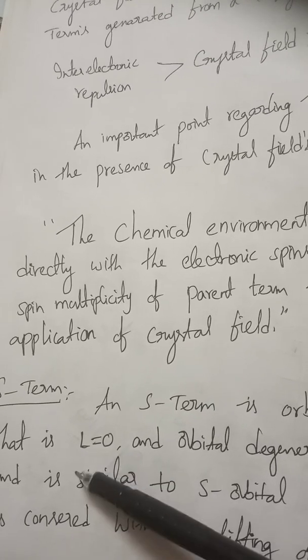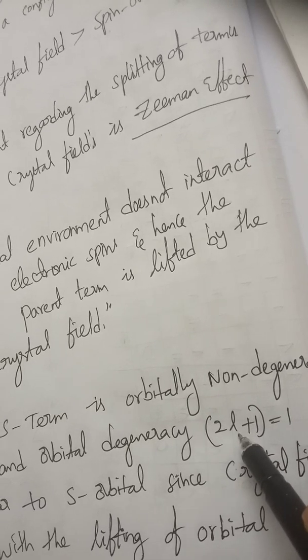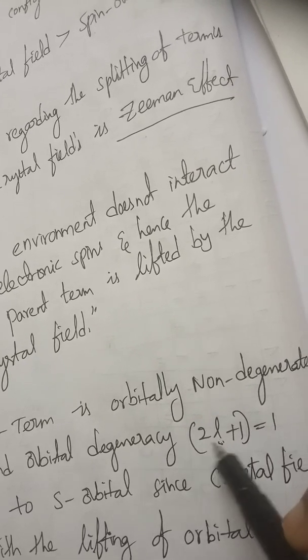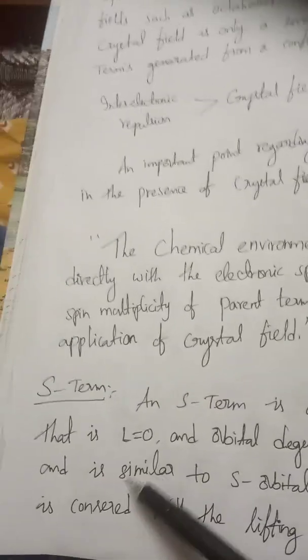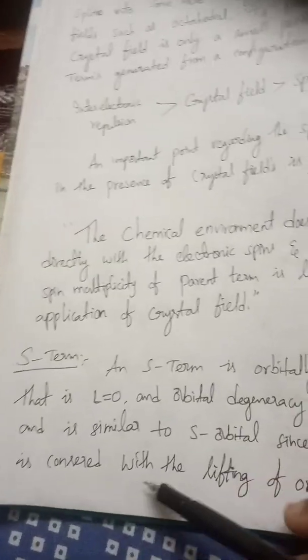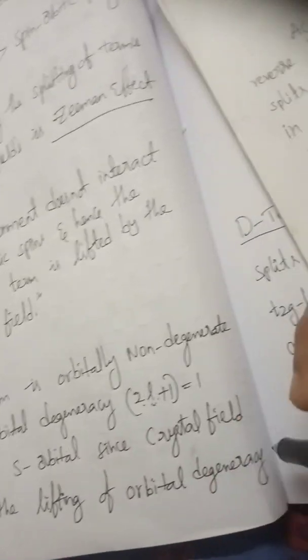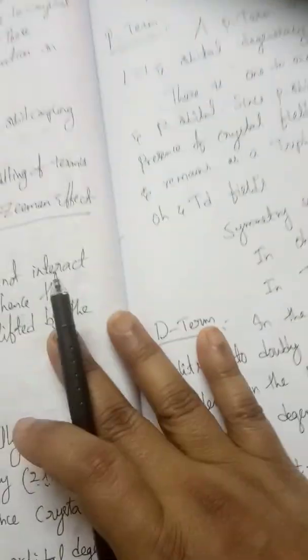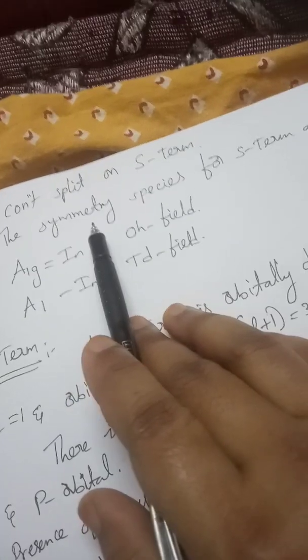Here we discuss the S term. The S term is orbitally non-degenerate because it is spherical in shape, so there is no further splitting. L equals 0, and the orbital angular momentum quantum number of the S orbital is 0. The degeneracy is 2L+1 = 2(0)+1 = 1. So for the S term, the crystal field is considered as a lifting of orbital degeneracy — it cannot split because it is spherical. The symmetry species for the S term is A1g.